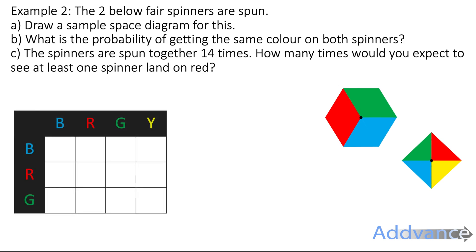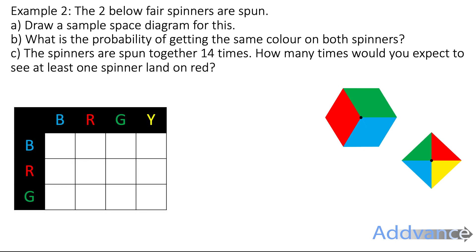We draw a sample space diagram like this and we will fill it in blue and blue, blue and red, blue and green, blue and yellow, red and blue, red and red. And we continue filling in all the combinations on this sample space diagram. And that is the sample space diagram drawn.